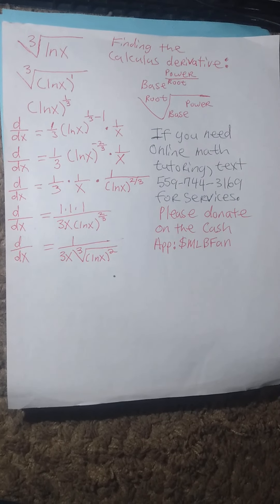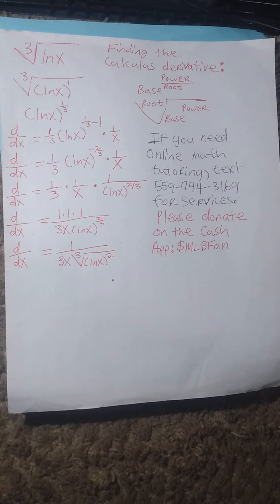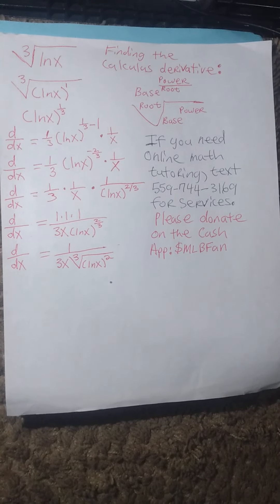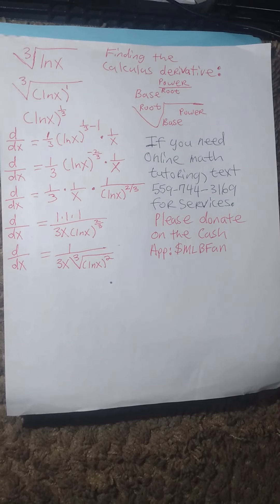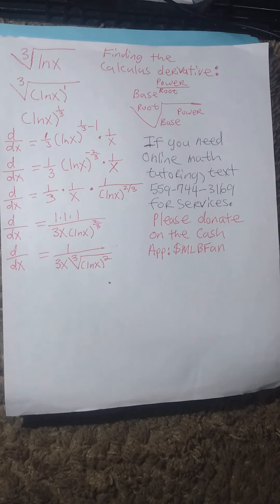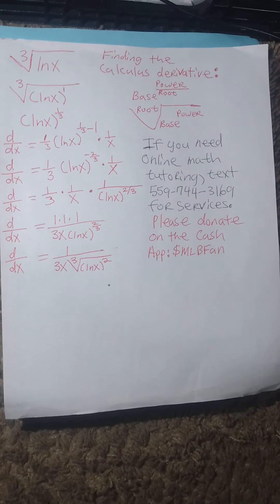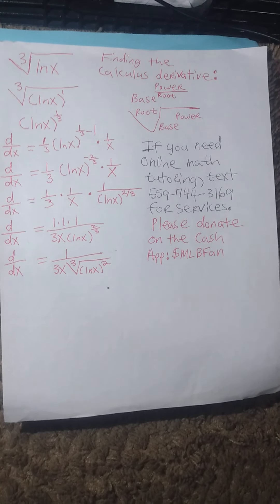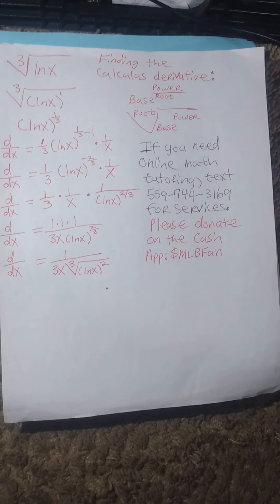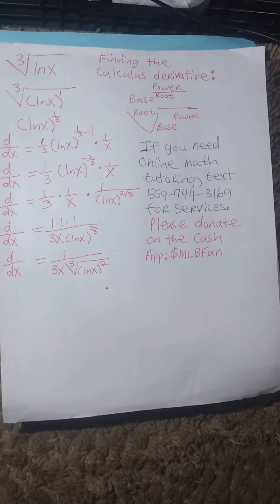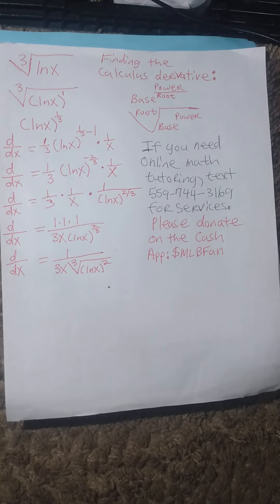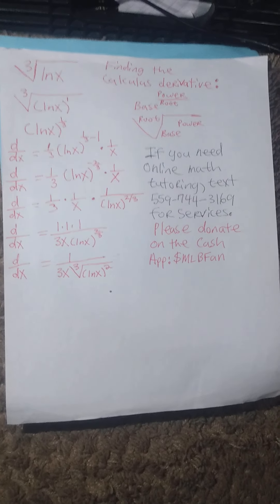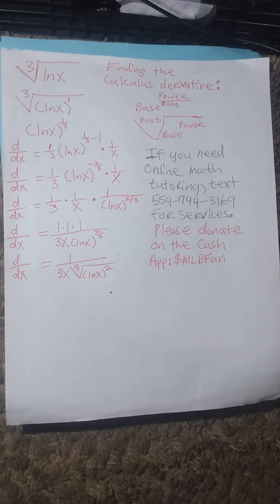Now we need to know another college algebra formula: the root of the base raised to the power. So the function natural log of x to the 2/3 power needs to be flipped back in the form of root base to the power — that becomes the 3rd root of natural log of x in parentheses squared. So the complete derivative is 1 divided by 3x times the 3rd root of natural log of x squared, or raised to the 2nd power.